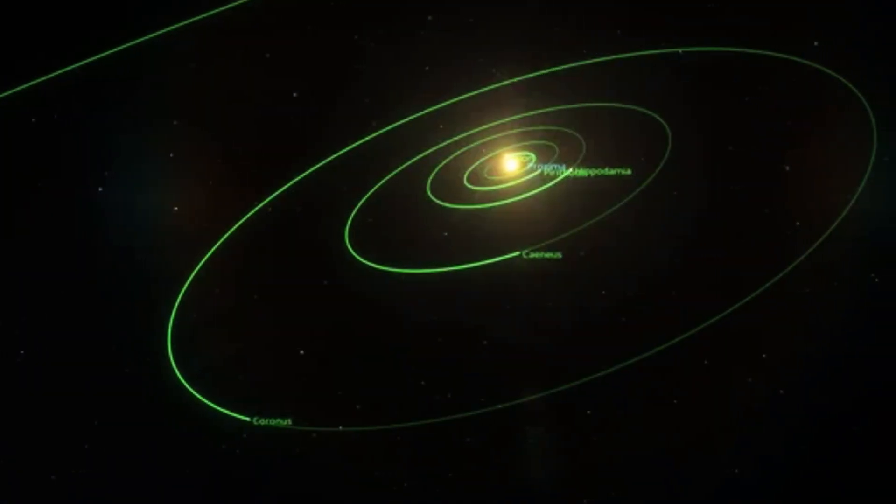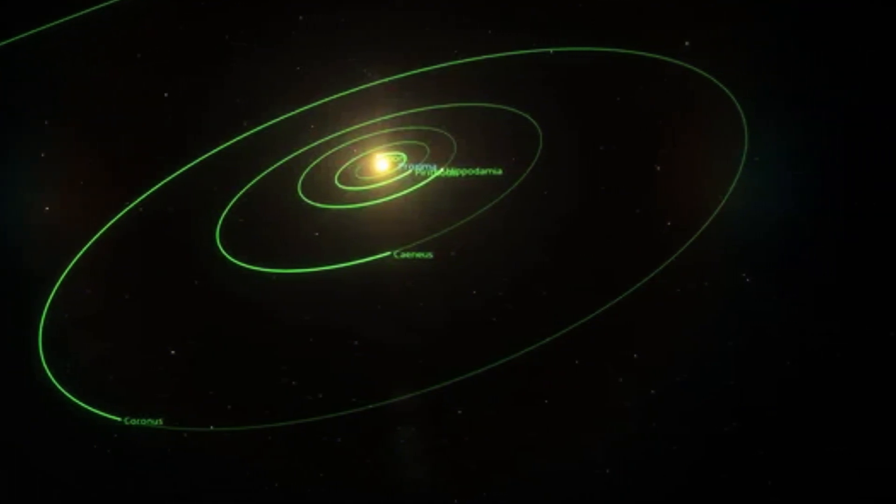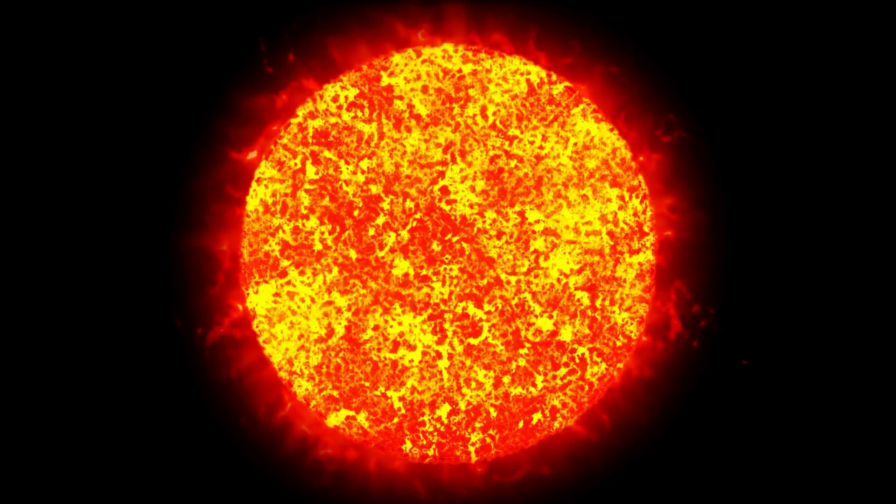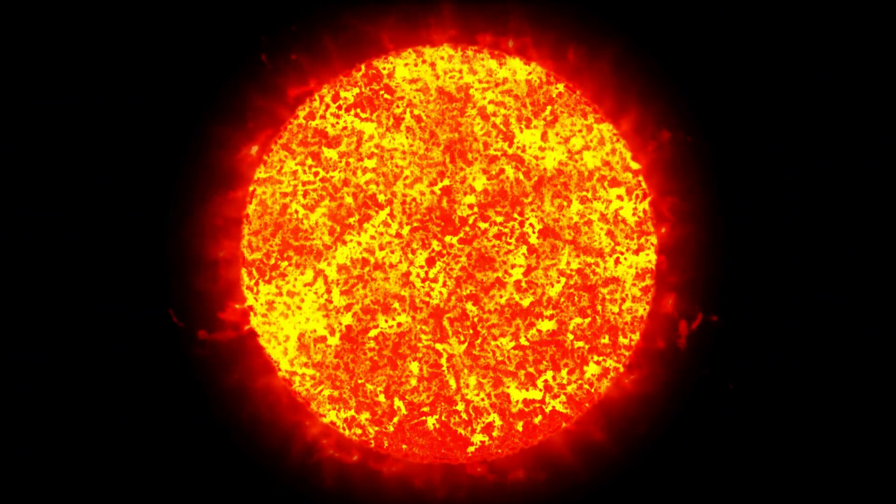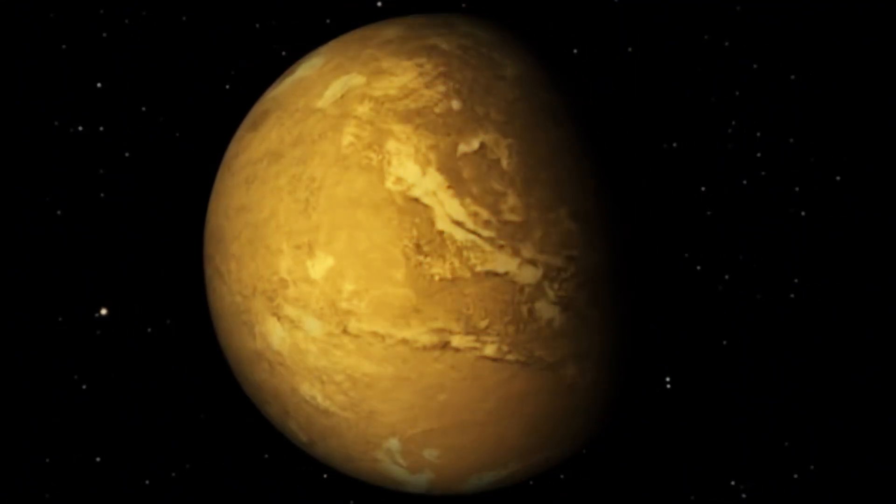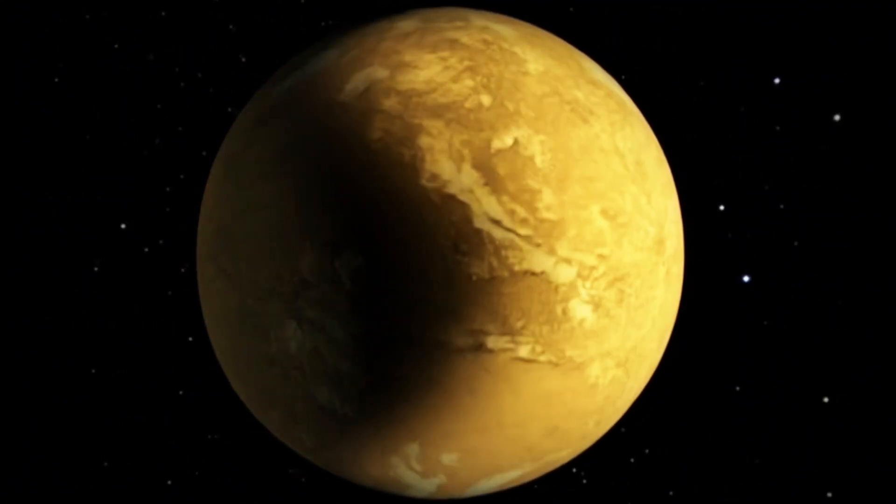Its orbit is remarkably close to its star, with a radius of just 7.3 million kilometers, less than 5% of the Earth-Sun distance, making it a very compact system. Despite its proximity, Proxima Centauri is a small red dwarf that emits significantly less energy than our Sun.